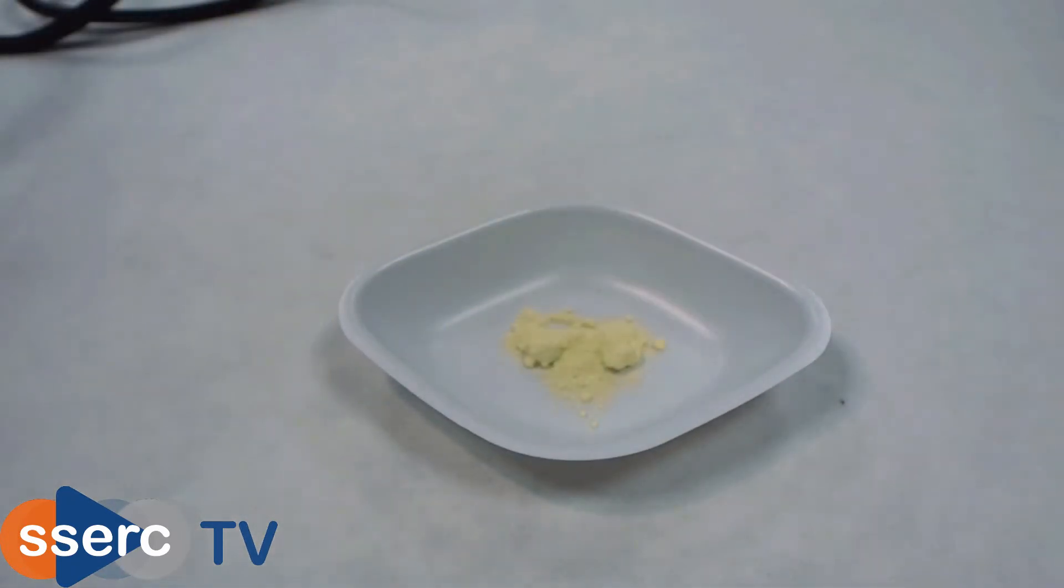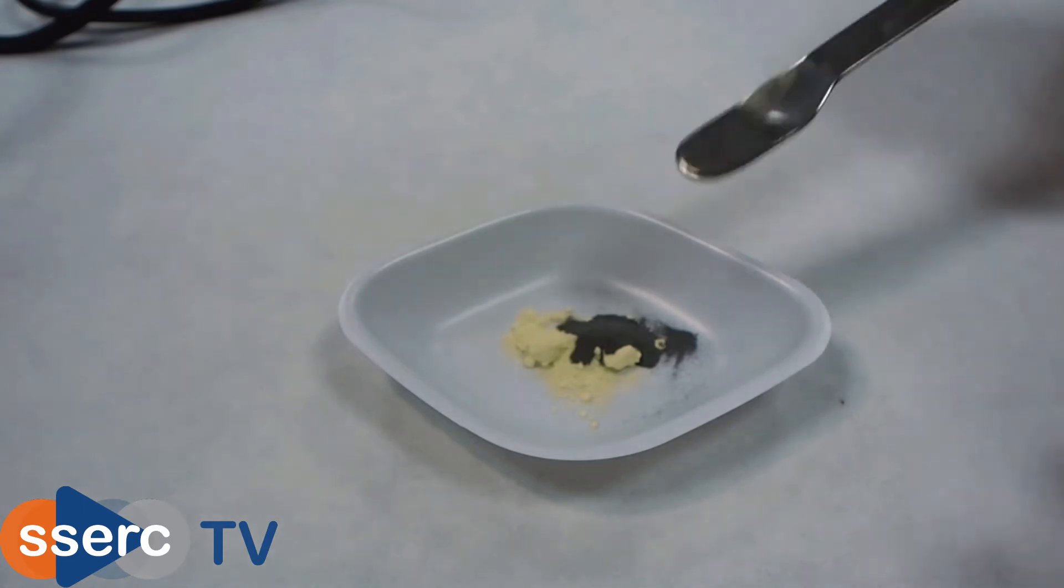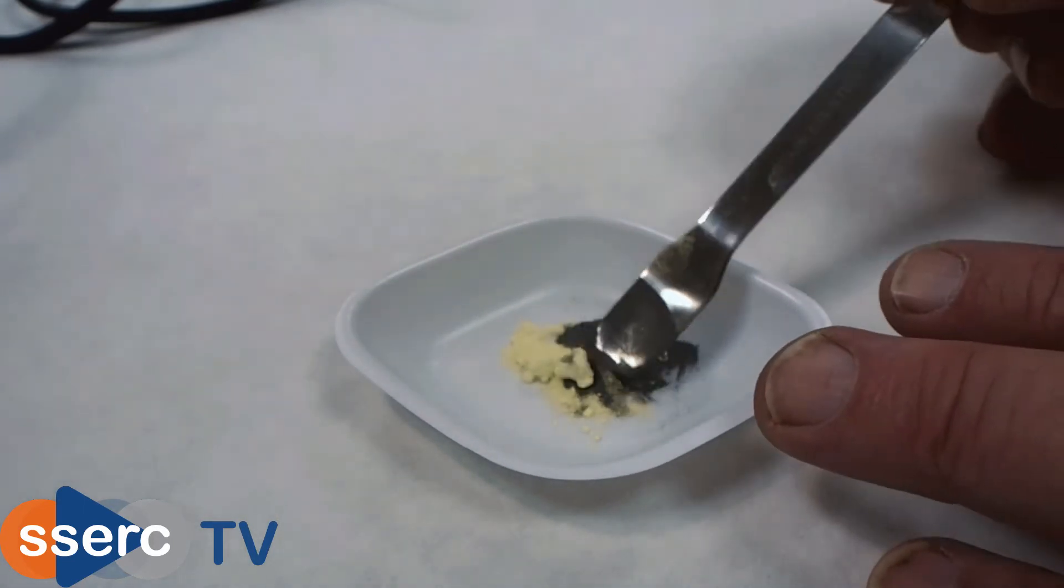Hi everyone. Today we're going to look at the reaction between iron and sulfur. This reaction is often used as an example of a chemical reaction between two elements to make a new substance. Here we're doing it on a micro scale.